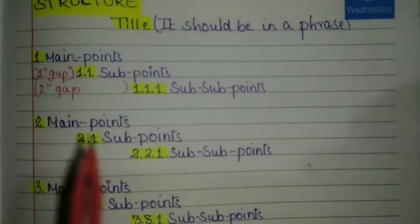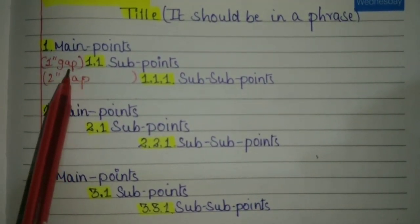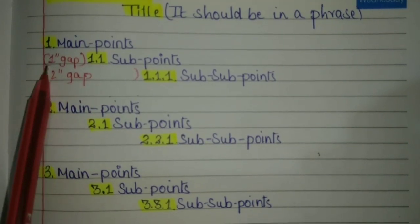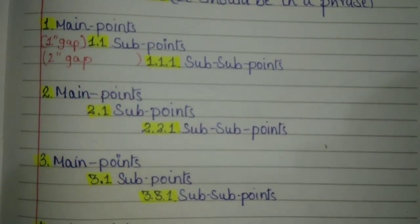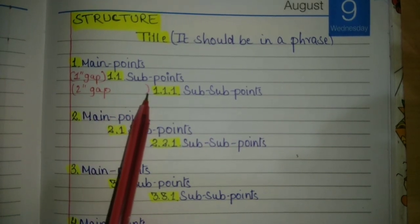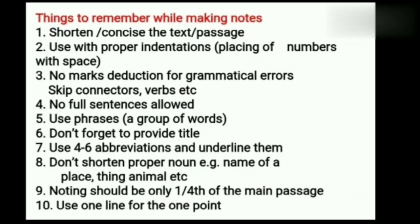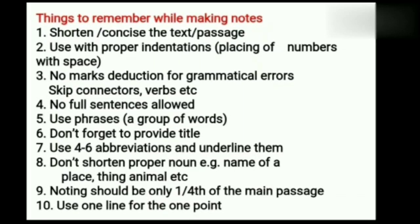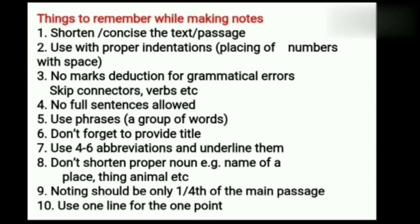Point number two: use proper indentations. Based on their importance, you have to place the points. There is a distance from the margin for the points section, then for sub-points you give a bit more space from the margin. Point number three: there is no marks deduction for grammatical errors, and therefore you can skip connectors, you can skip verbs. That is why you can get full marks in note making — there is no negative marking for grammar errors.